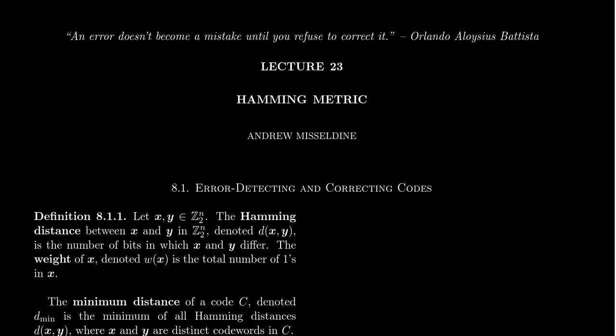In this lecture, I want to continue what we started in the last lecture about algebraic coding theory and how we're going to use algebra, particularly linear algebra, on the vector space Z2N to help us develop error-detected and error-correcting codes.